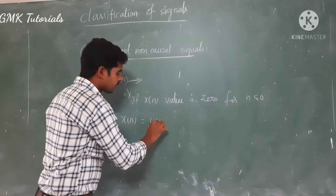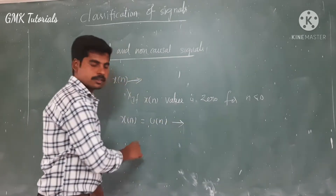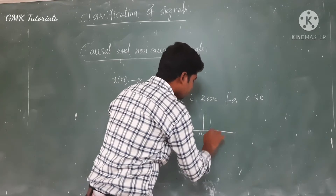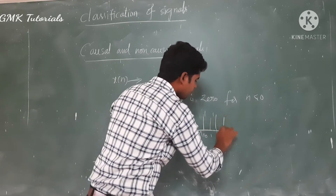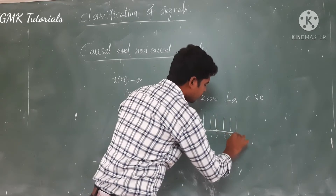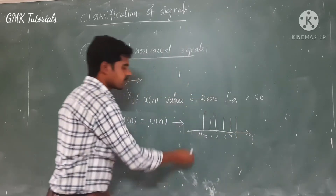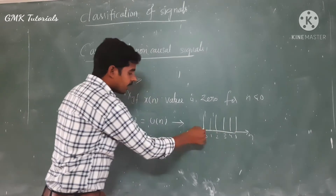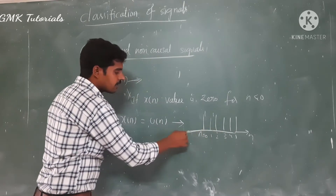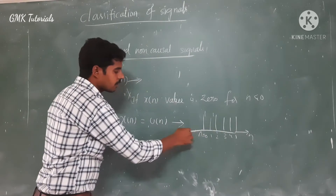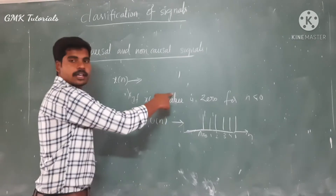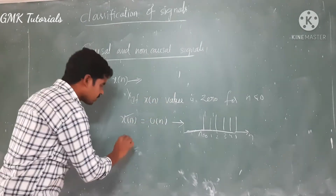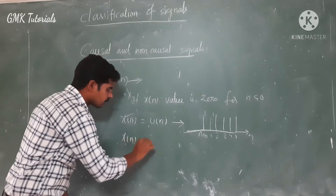An example of a causal signal is x of n equal to u of n. It is a causal signal because it starts from n equal to 0 and goes to infinity: 0, 1, 2, 3, 4, 5. For negative values, n less than 0, the value is equal to 0. Therefore it satisfies the above condition, so the given sequence x of n is a causal signal.